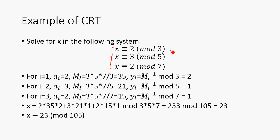So first we think of the condition where i equals 1, so this is the first row. Clearly a sub i is going to be 2, just by definition. M sub i is going to be 3 times 5 times 7, because that's the product of the small moduli, divided by 3 because that's the modulus we're working with for i equals 1, so that's how we get 35. And then we can just use the extended Euclidean algorithm or guessing and checking to figure out that the inverse for M sub i modulo 3 is going to be 2. We can repeat this process for i equals 2 and i equals 3, and we're going to find these values for M sub i and y sub i. Then we just plug it into our summation formula, and we're going to get that x is equivalent to 23 mod 105.